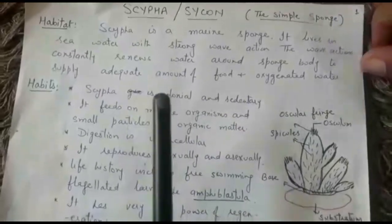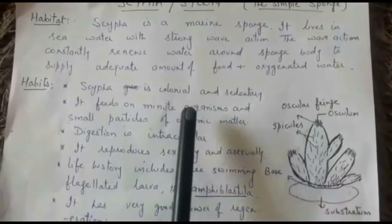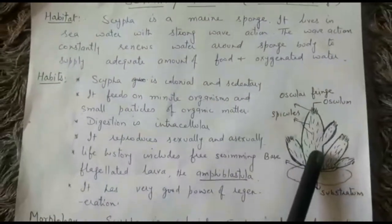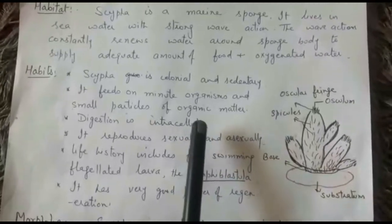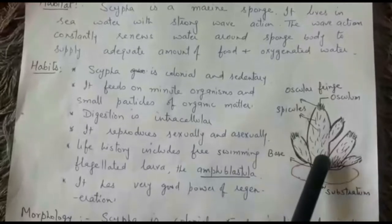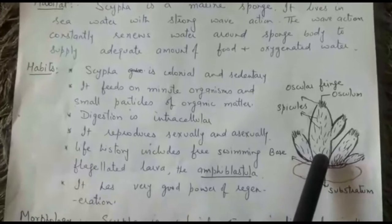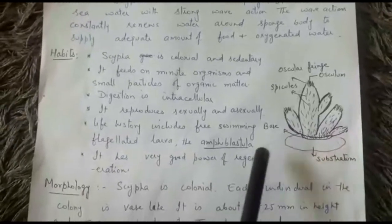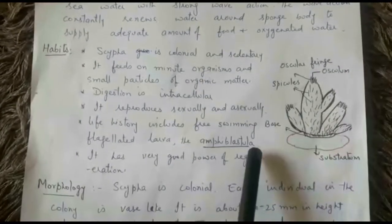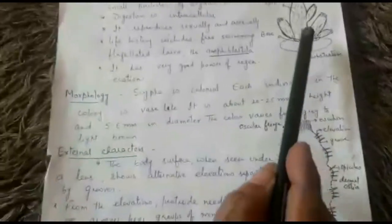Scypha is colonial, meaning it lives in a colony, and it is sedentary, meaning it is fixed. It feeds on minute organisms and particles of organic matter, and digestion is intracellular, meaning it occurs within the cells. It undergoes both asexual and sexual reproduction, and its life history includes a free-swimming larva known as amphiblastula. It has a very good power of regeneration.